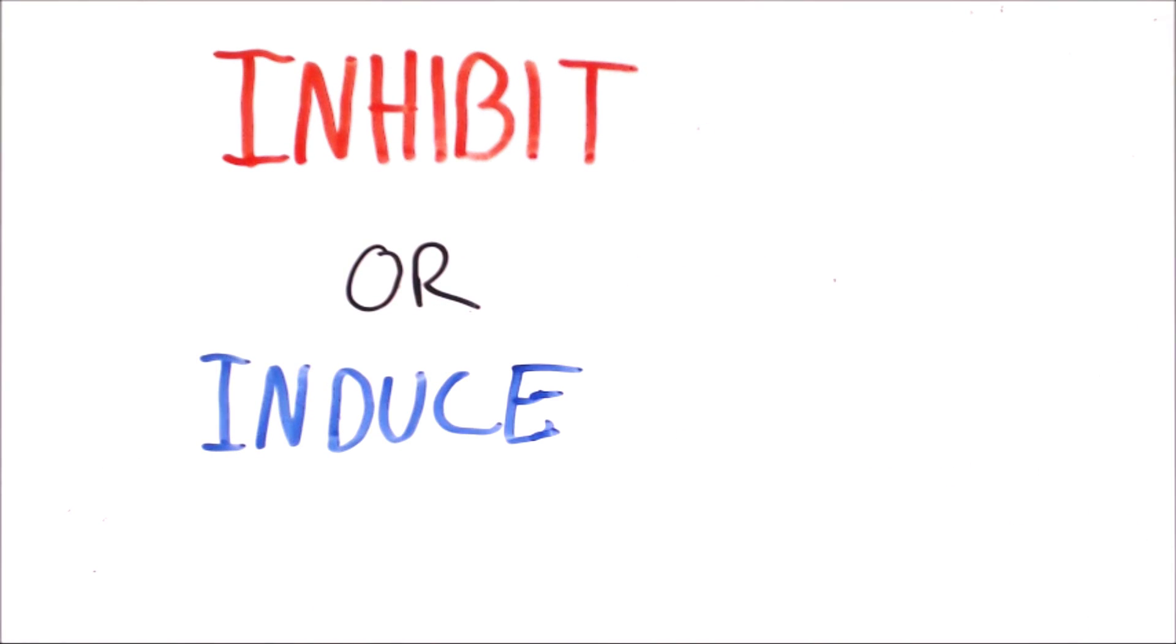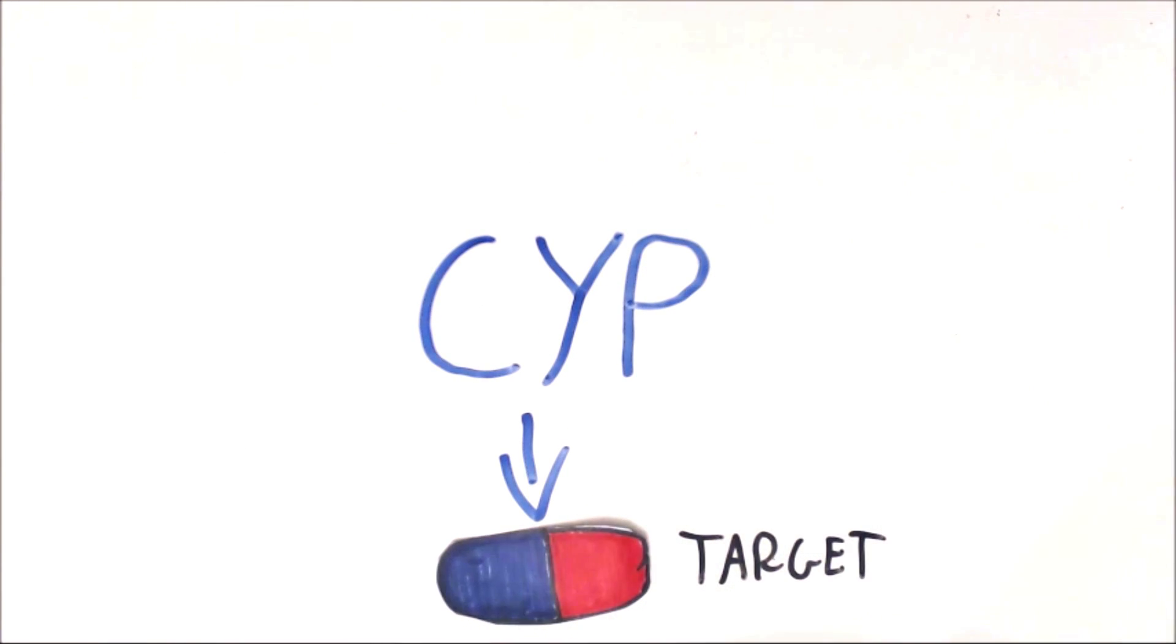This is a double-edged sword. For example, let's take two different drugs. One is metabolized by CYP, let's call this the target drug, and one is a CYP450 inhibitor.